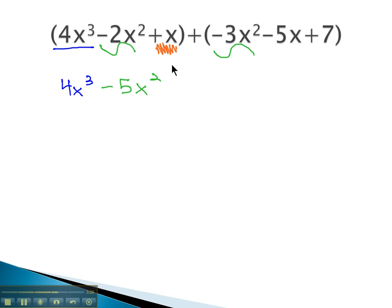We also see a plus x, which can be combined with the negative 5x, giving us negative 4x's, because we always assume there's a 1 in front of the x.